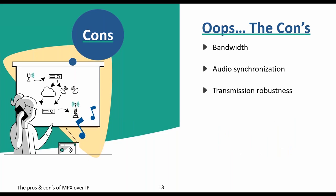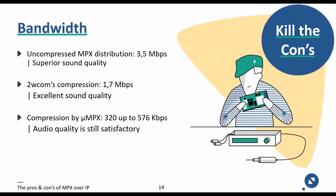Bandwidth is very important to the broadcaster as it has a direct impact on operational cost. As mentioned, uncompressed MPX distribution and even 2WCOM's compression may not satisfy radio stations with limited bandwidth — we are facing bandwidths typically between 1.7 and 3.5 megabits per second. However, micro-MPX does offer extremely low bandwidth with good audio quality.